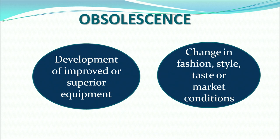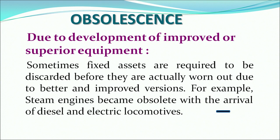The second cause of depreciation is obsolescence, which leads to a decline in the value of the asset for two reasons. First is the development of improved or superior equipment, and second is the change in fashion, style, taste, or market condition. Due to the development of improved or superior equipment, earlier assets are discarded because better and improved versions are now available. For example, steam engines became obsolete with the arrival of diesel and electric locomotives, or colour TVs replaced black and white TVs.